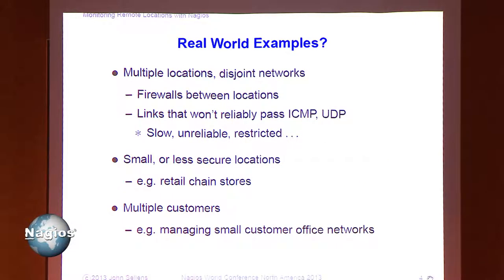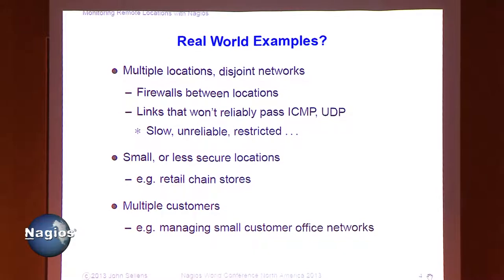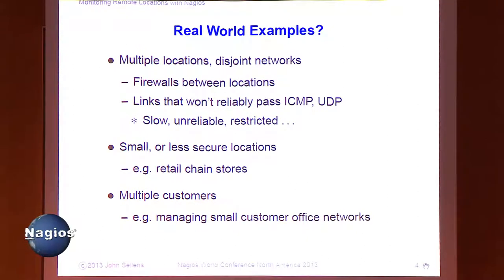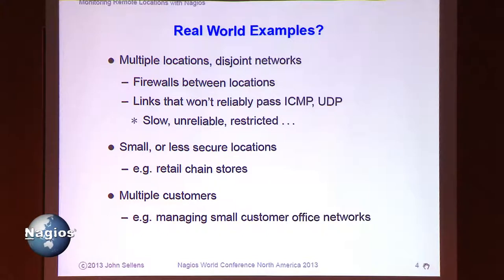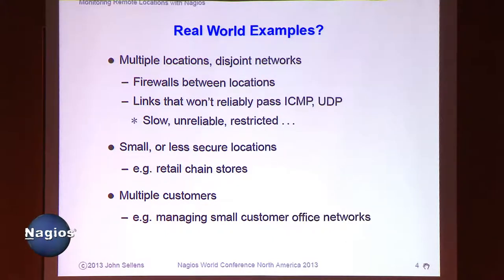The network's actually connected on my thing here, so there you go — life is good. Real world examples: multiple locations, disjoint networks, different people may control it. You may be in a large company on the server team, and there's a separate network team, and maybe you don't always get along. If you go to the network team and say I need 12 holes through the firewall, they may give you a dirty look and say they can't possibly do that. Some networks that won't necessarily pass everything — I mentioned UDP a moment ago.